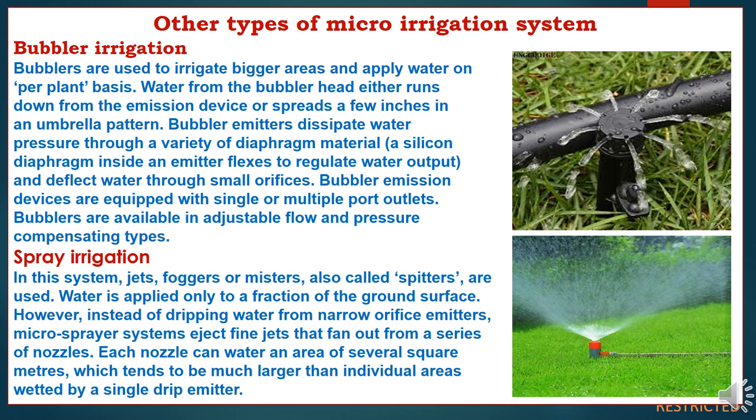Another type of micro-irrigation is bubbler irrigation. Bubblers are used to irrigate bigger areas and apply water on a per-plant basis. Water from the bubbler heads either runs down from the emission devices or spreads a few inches in an umbrella pattern. Bubbler emitters dissipate water pressure through a variety of diaphragm materials and deflect water through small orifices. Bubbler emission devices are equipped with single or multiple port outlets, and are available in adjustable flow and pressure-compensating types.